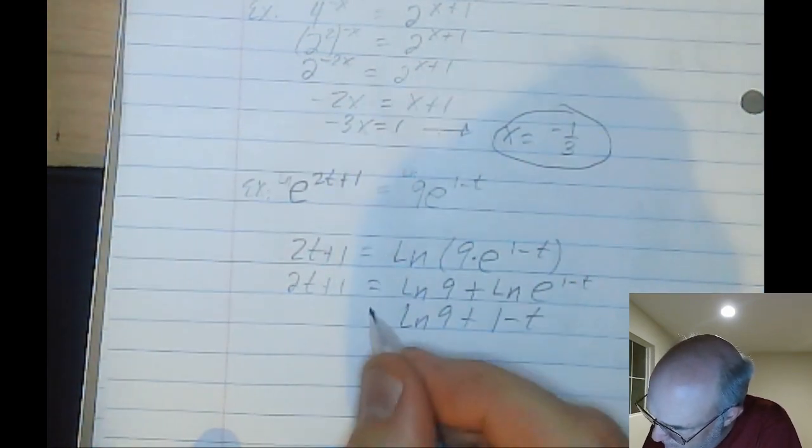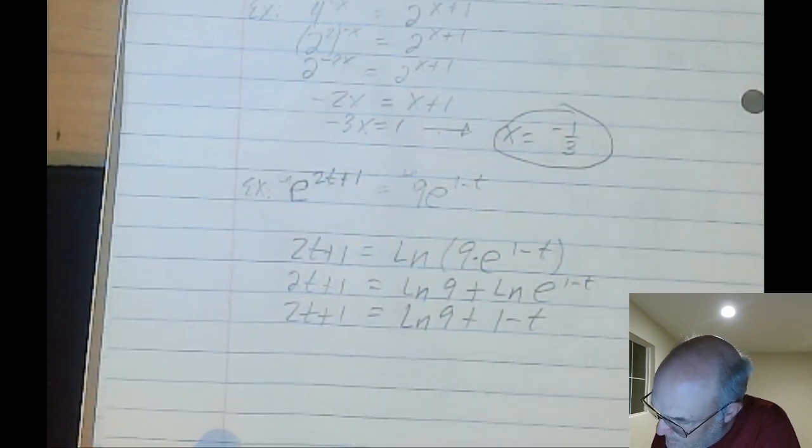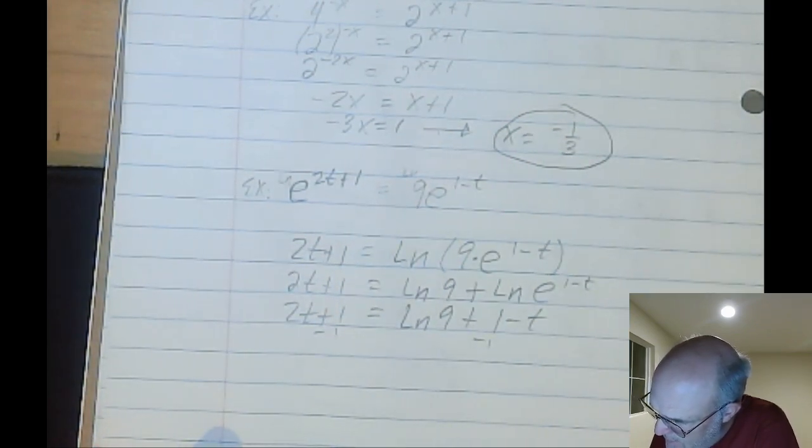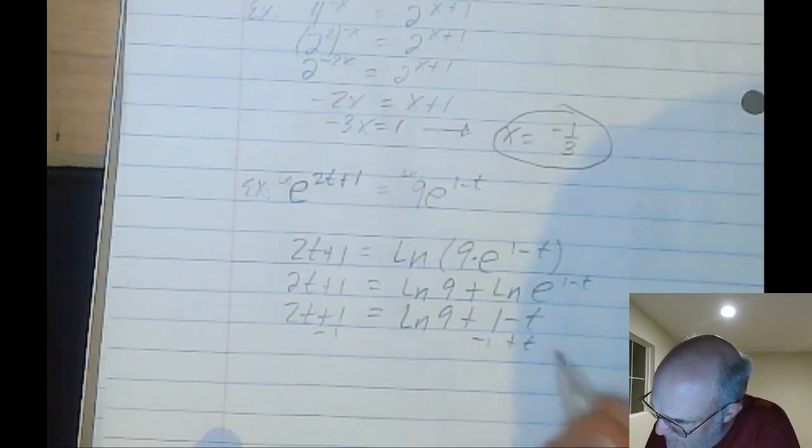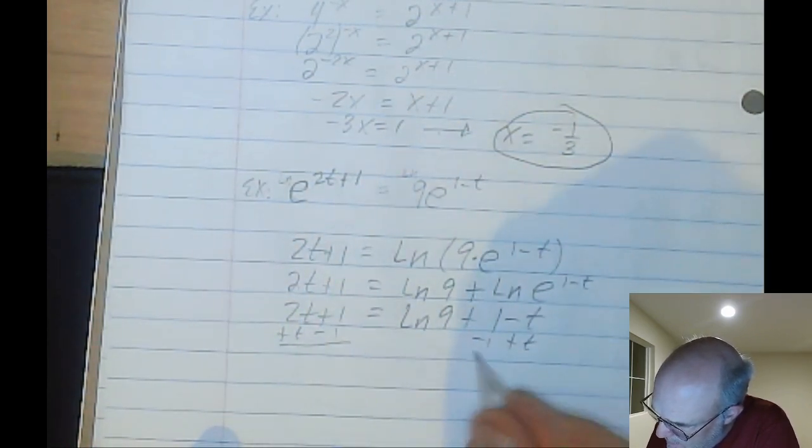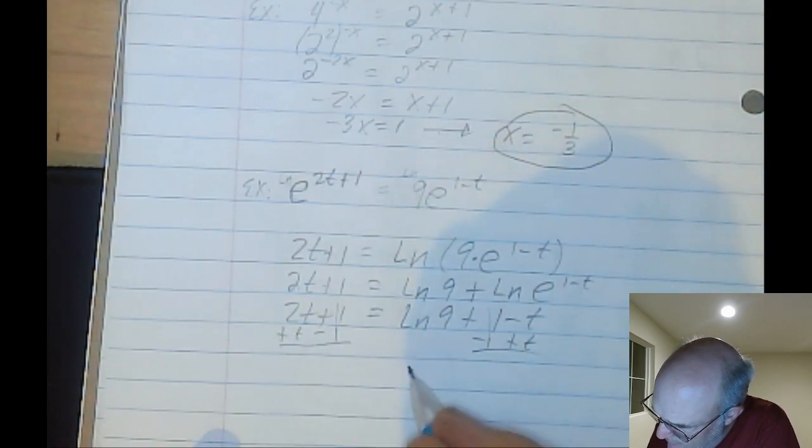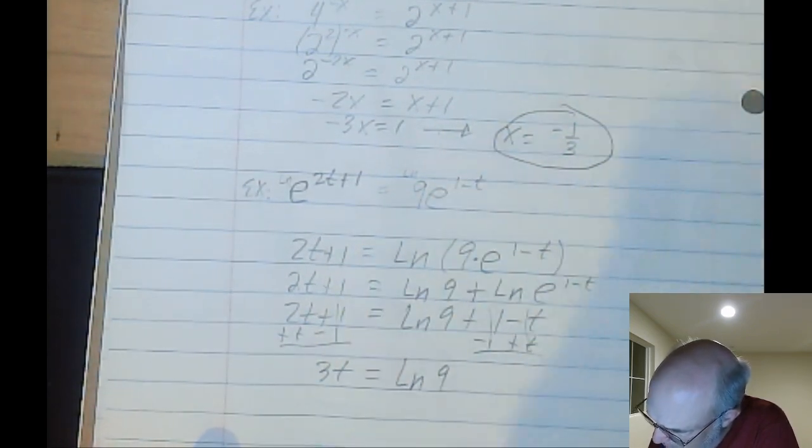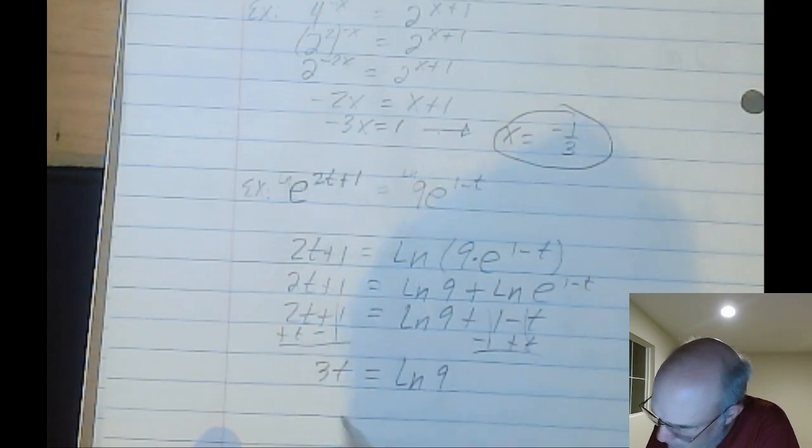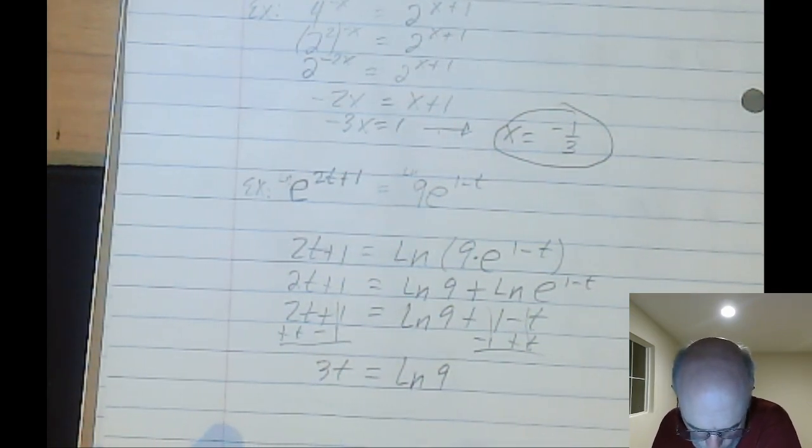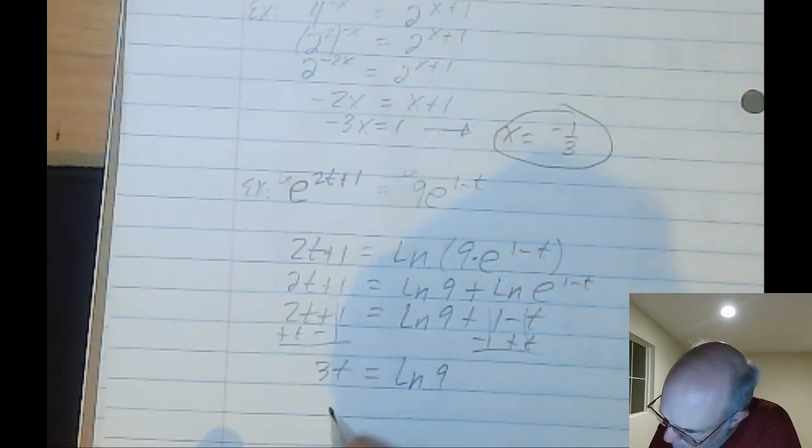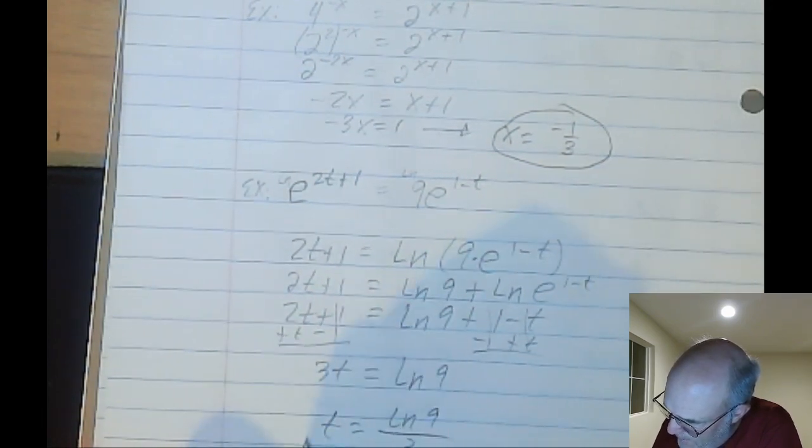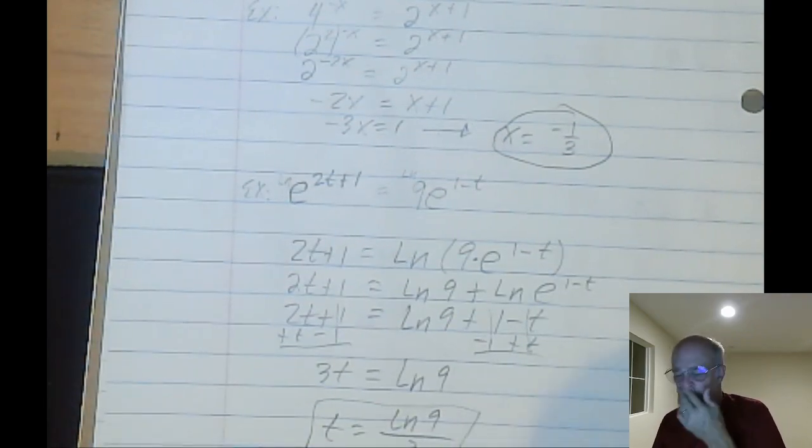Okay, equals 2t plus 1. All right, let's subtract 1 from both sides. Let's add t to both sides. So these guys cancel, I get this cancel, I get natural log of 9 over here. On the left I get 3t. So divide by 3. T equals natural log of 9 over 3.